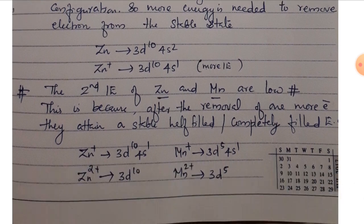The second ionization enthalpy of Zn and Mn is low. For Zn+, the configuration is 3d10-4s1; removing that electron gives a stable 3d10 configuration. For Mn, the configuration is 3d5-4s1, so Mn2+ gives the 3d5 half-filled configuration, which is also stable. Therefore the second ionization enthalpy is small because the resulting configuration is stable.